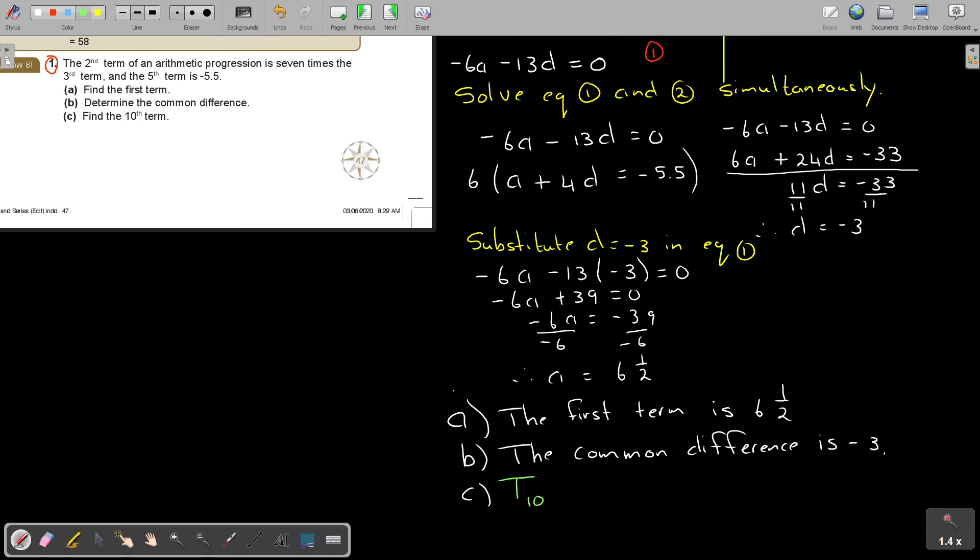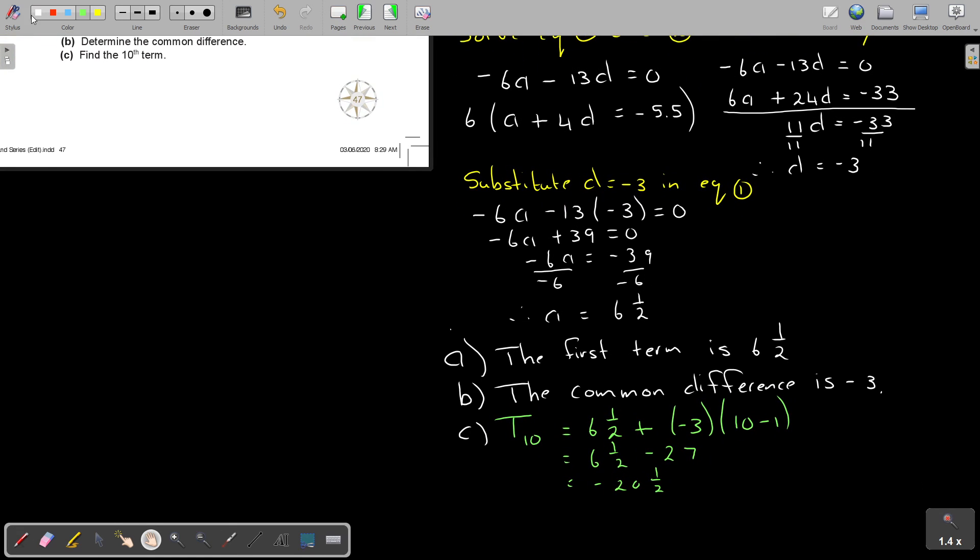So I'm just going to say, T_10 equals A, I put in A, 6 and a half, plus D, it's negative 3, and it's 10 minus 1, and that's going to be 6 and a half. That is going to be 9 times, 9, so it's negative 27, and the answer is going to be negative 20 and a half. And if I really want to end by, I can say, therefore, the 10th term is negative 20 and a half point, and that's my final answer.